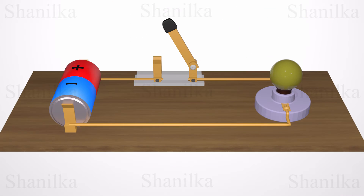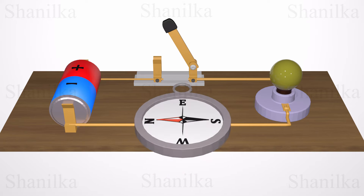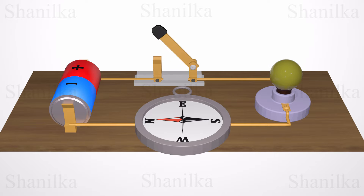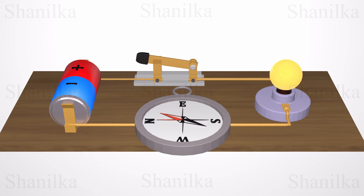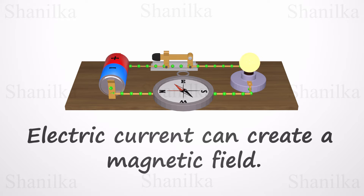In 1820, Danish natural philosopher Hans Christian Ørsted noticed that when he turned on an electric current by connecting the wire to both ends of the battery, a nearby compass needle deflected away from magnetic north where it normally pointed. He discovered that a current-carrying conductor produces a magnetic field around it, suggesting a relationship between moving electric charge and the magnetic field. This phenomenon is called electromagnetism.